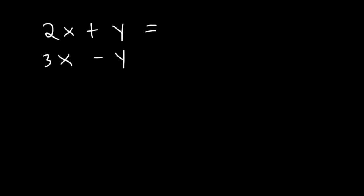So let's say that 2x plus y is equal to 5, and 3x minus y is also equal to 5. So how can we find the value of x and y?